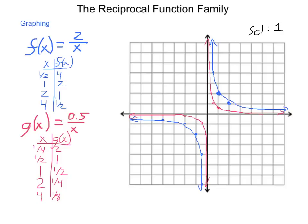The a acts as a vertical stretch and did stretch or compress our graph. If a is ever negative, our graph that appears in quadrants 1 and 3 will end up in quadrants 2 and 4. As a reminder of the quadrants: quadrant 1, 2, 3, and 4. If our a value is positive, we'll typically be in quadrants 1 and 3; if negative, in quadrants 2 and 4.